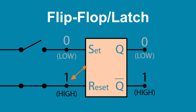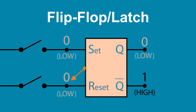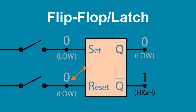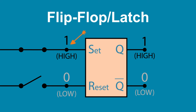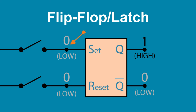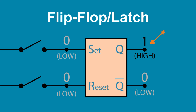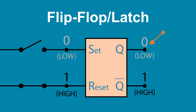Other changes at the inputs do not affect the output. Reset can go high and low and won't do anything as long as the output is low. After set goes high once, changing the output to high, set can go high or low without changing the output, until the output is reset low again.